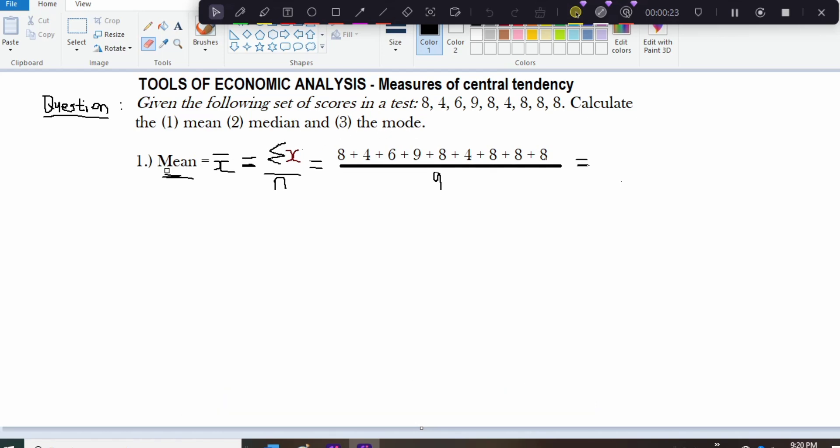So the first question is to calculate the mean, which is also called the arithmetic mean. It is represented by x bar, as you can see on the screen, following the cursor or the pointer. So x bar equals to summation x all over n. That is the formula for calculating the mean.